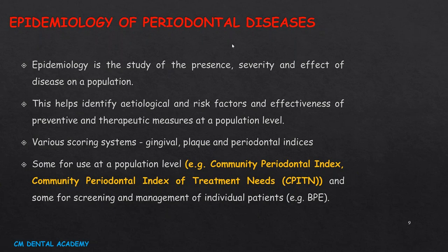Let's begin with the epidemiology of periodontal diseases — how it is distributed worldwide and what percentage it affects in specific populations. Epidemiology is the study of presence, severity, and effect of disease on a population. This helps identify etiological and risk factors and the effectiveness of preventive and therapeutic measures at a population level, using various scoring systems such as gingival, plaque, and periodontal indices. Indices used for population-level epidemiological studies include the Community Periodontal Index and CPITN, while the Basic Periodontal Examination is used for routine screening and management of individual patients.